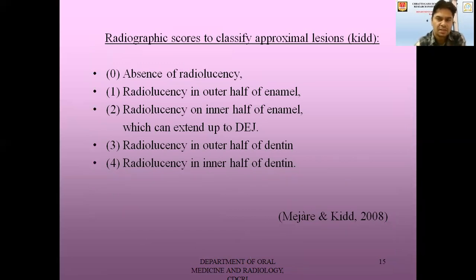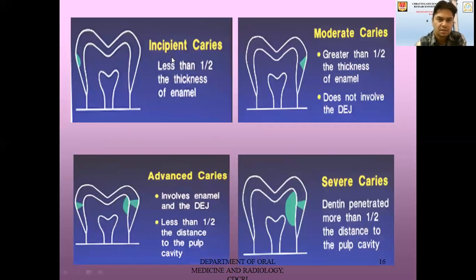Radiographic scores to classify proximal lesions have been given by Kidd. There are four scores: score zero for absence of any radiolucency, score one for radiolucency in the outer half of enamel, score two for radiolucency in the inner half of enamel which can extend up to the DEJ, score three for radiolucency in the outer half of dentine, and score four for radiolucency in the inner half of dentine. These correspond to incipient, moderate, advanced, and severe caries as seen on the radiograph.